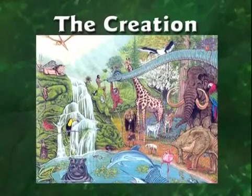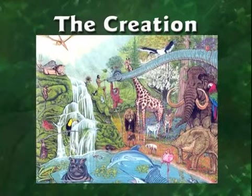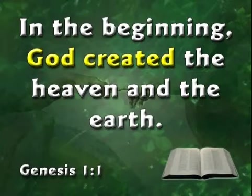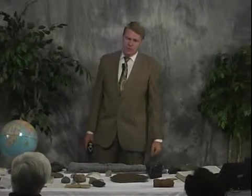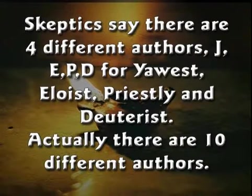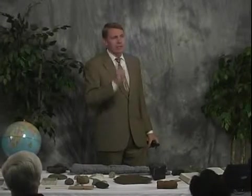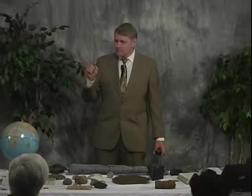I don't think it's possible for us to understand what the world was like 6,000 years ago when God made it. The Bible says, in the beginning God created the heaven and the earth. Skeptics I debate at universities say they don't believe Genesis. They point to four different authors — what they call the J-E-P-D theory: Yahwist, Elohist, Priestly, and Deuterist — noting very different styles of writing. Genesis chapter 1 uses the word God 31 times, while chapter 2 uses the phrase Lord God throughout. The skeptics say there are four different authors, so we can't trust it.